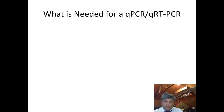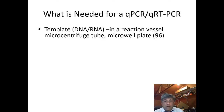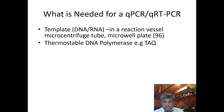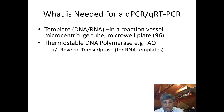So what is needed to perform a qPCR or qRT-PCR? First of all, you need a template, which is a DNA or an RNA sample from a patient, and you need to carry it out in either a microcentrifuge tube or microtiter well. You also need a thermostable DNA polymerase, such as Taq, which is a polymerase isolated from a thermophile called Thermus aquaticus.